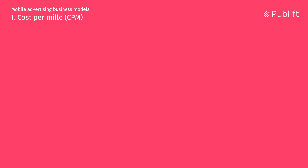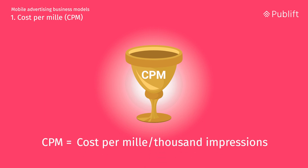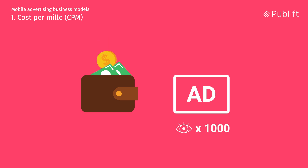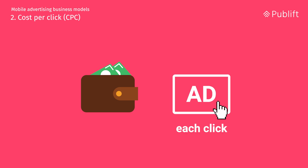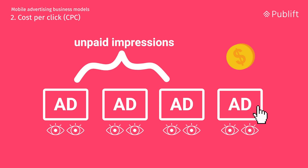Number one: CPM, or cost per mil. Typically seen as the holy grail of acronyms, CPM stands for cost per mil, or thousand impressions — advertisers are charged every time an ad shows 1,000 times. Number two: cost per click, or CPC. With CPC, advertisers are charged for each ad click on their mobile ads. One important point for publishers using this method: they run the risk of serving loads of free ad impressions, consequently missing out on that much desired ad revenue.